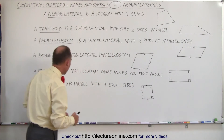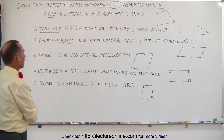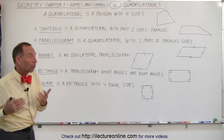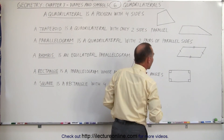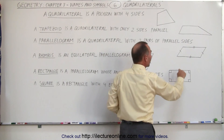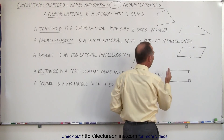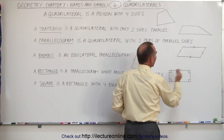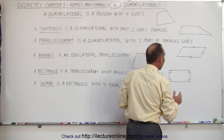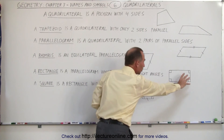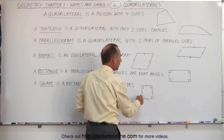Finally, the most restrictive quadrilateral is called a square. It is a rectangle, so all four angles must be right angles, or 90 degrees. We know that the top and the bottom side must be parallel to one another, just like for a parallelogram, and the left and the right side must be parallel to one another. The angles must be right angles, and the final restriction is that all the sides must also be equal in length.